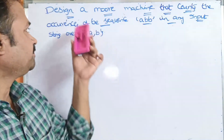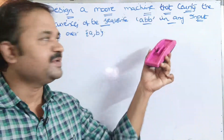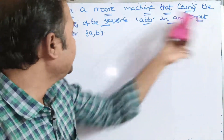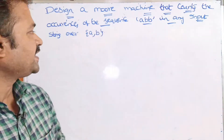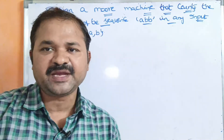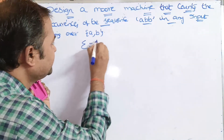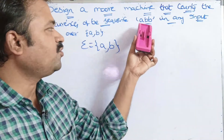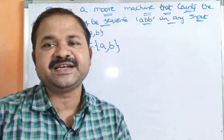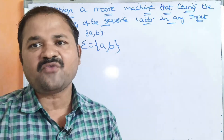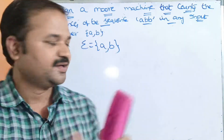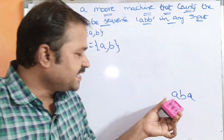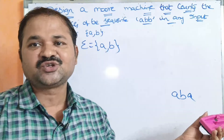Let's see this example. Design a Moore machine that counts the occurrences of the sequence ABB in any input string over A, B. So here the input alphabet mainly contains two symbols: sigma equals {A, B}. Here we have to find out how many times ABB is present in the given string. For example, the string A, B, A does not contain ABB, so the output is zero.